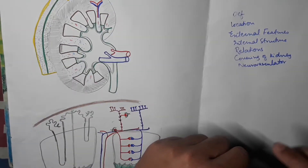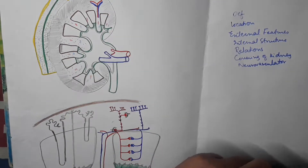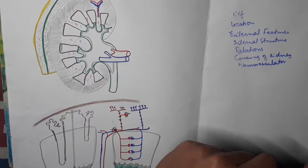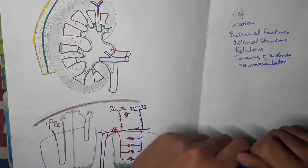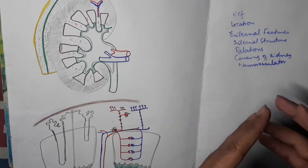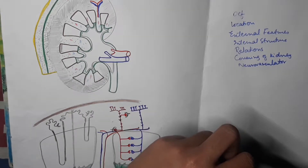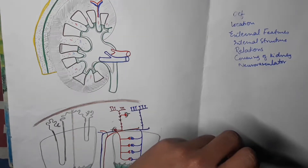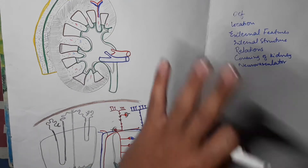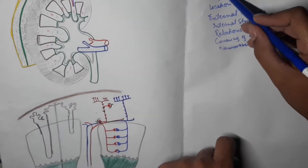In the fetus, the kidney is lobulated, made up of about 12 lobules. In the adult, these lobules combine together to form a complete kidney. When you look at an adult kidney, you can still see lobule-like markings which indicate that in the fetus the kidney was in lobulated form.